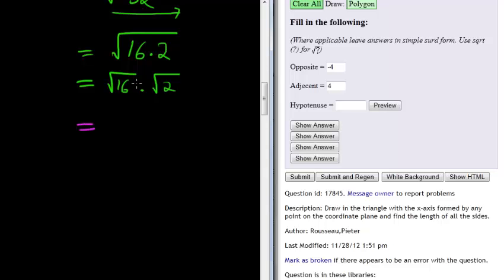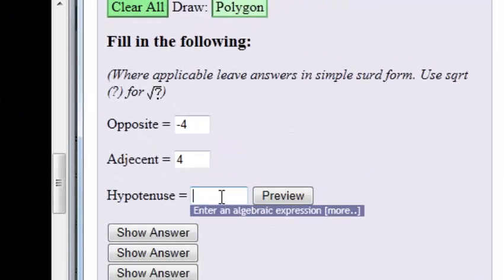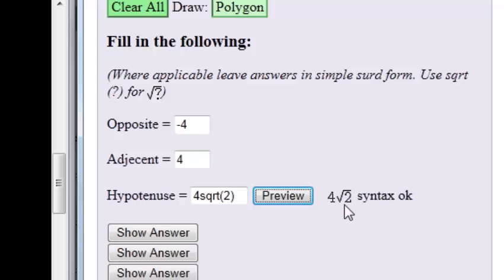And in the end, my answer is the square root of 16 is 4√2. And that is the length of the hypotenuse, 4 times the square root of 2. That's how they tell me I should write it, sqrt for square root. Let's preview to see. Here we go. That's perfect. You see, 4√2. And that's it.